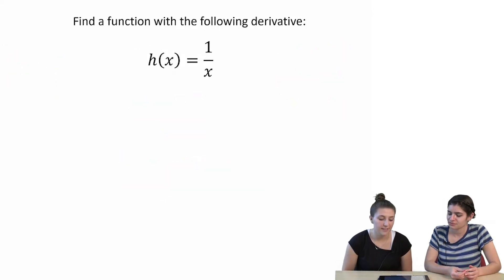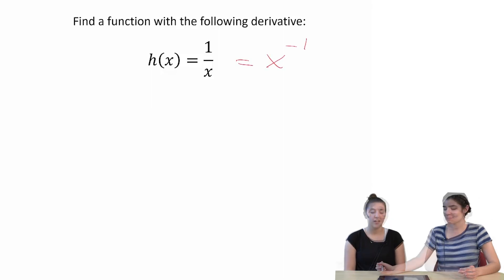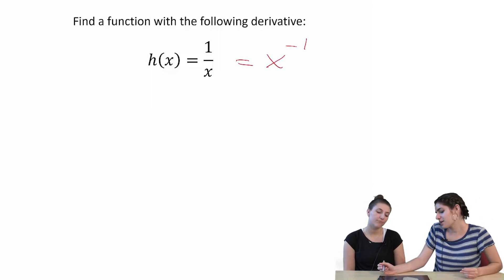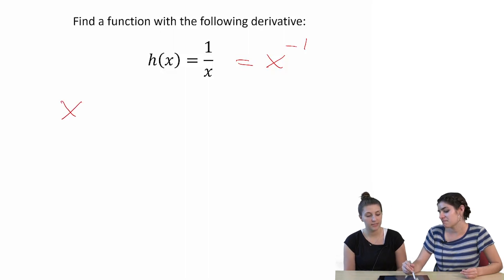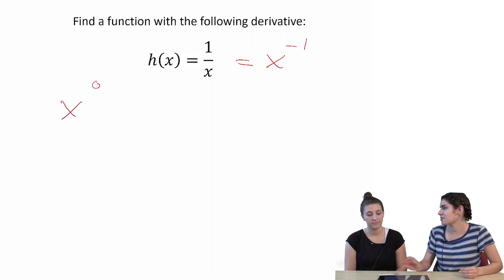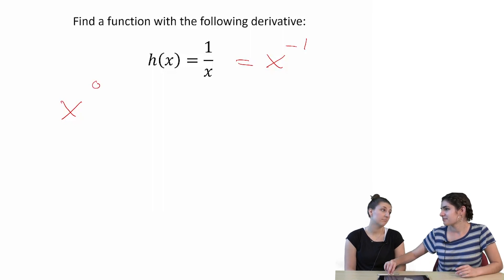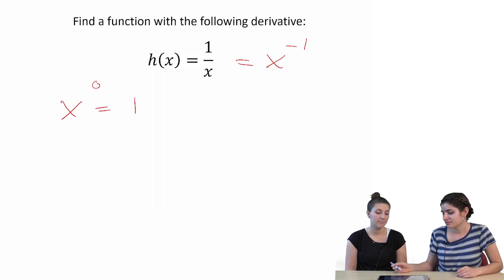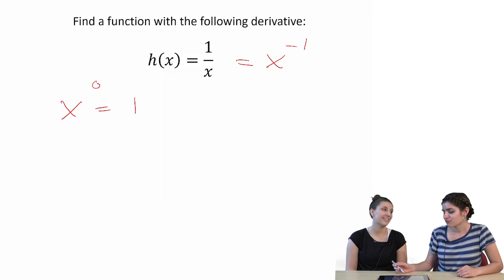So now h of x equals 1 over x. Well, we've just been adding 1 to the exponent. So let's just let's say that it came from x to the 0 power, which is 1. But then we lost the x. Well, okay. Wait.